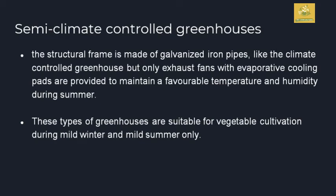After high-tech, the next type is semi-climatically controlled greenhouses. In this greenhouse, we can maintain a favorable temperature and humidity for the crop up to a particular level. They contain galvanized iron pipes and climate-controlling equipment with exhaust fans and operating cooling pads. These are mainly used for maintaining favorable temperature and humidity only during summer for crops. These types of greenhouses are mainly suitable for vegetable cultivation in mild winter or during mild summer, and can be used in critical conditions.